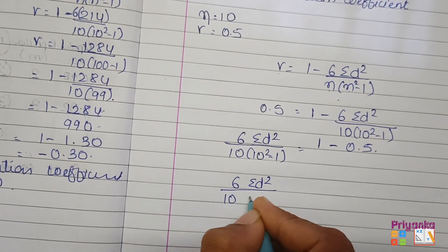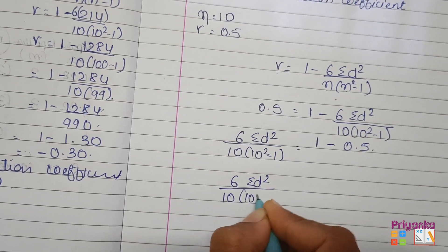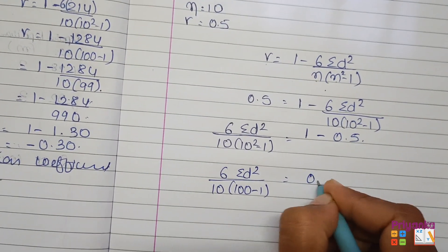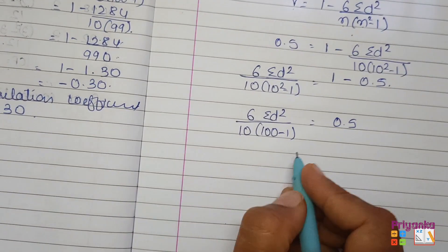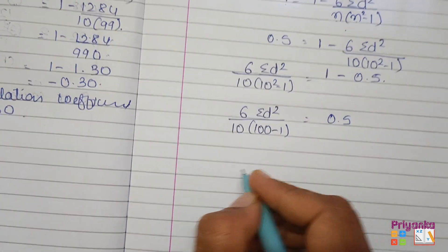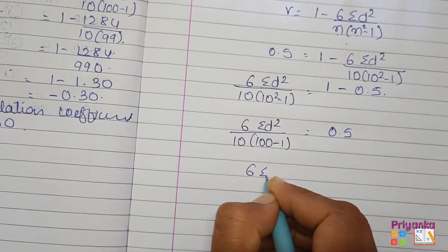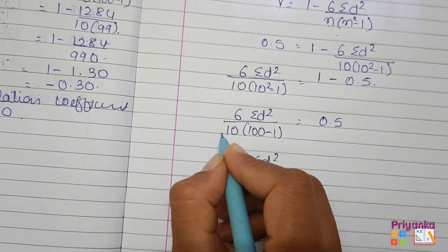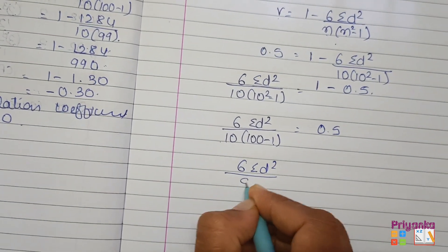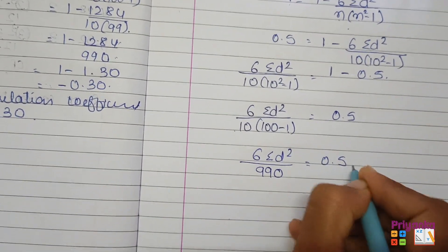6 sigma d square is 10, 10 square minus 1, 1 minus 0.5. First get this subtracted. That is 10, 10 square that is 100 minus 1, and here we get the answer 0.5.